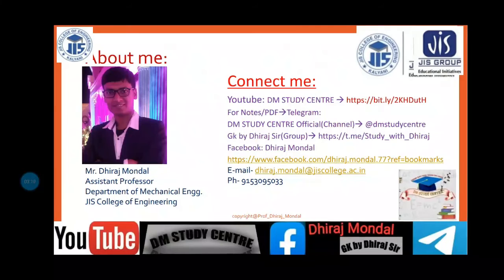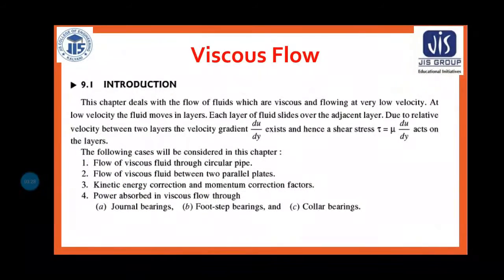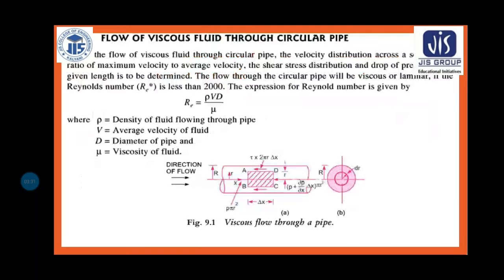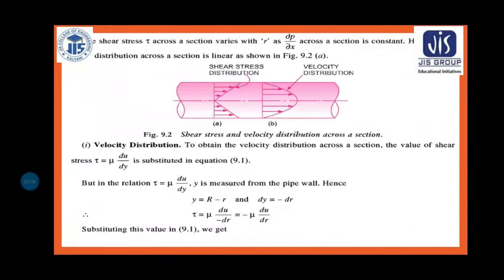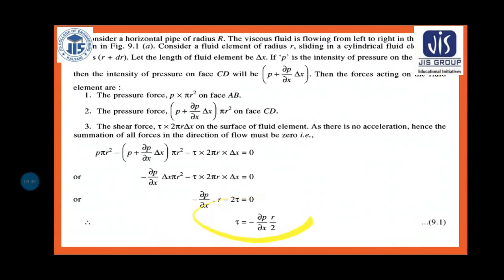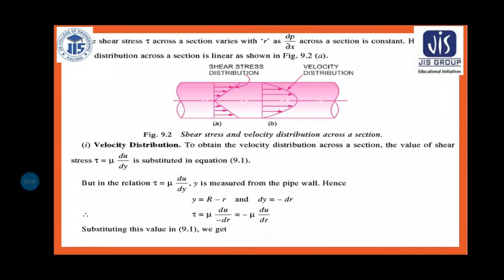In viscous flow last class we discussed this part - how we can calculate shear stress. The formula is: τ = -(dP/dx) · r/2. I hope this formula is well known to you.